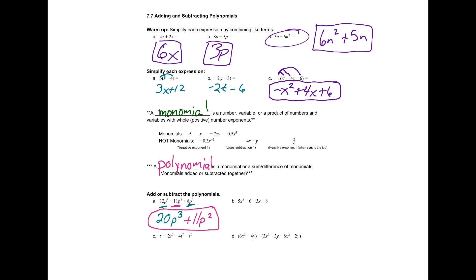Next problem, 5x squared minus 6 minus 3x plus 8. So we're going to combine like terms. So I see a 5x squared. There's nothing to combine a 5x squared with, so I just write it down. The next thing I see is a negative 3x. Nothing to combine a negative 3x with, so we just write it down. And then last thing we've got is a negative 6 and a positive 8, plus 2. Remember, I know that the two numbers here, the negative 6 and the plus 8, go together because they don't have any x's or x squared in them.